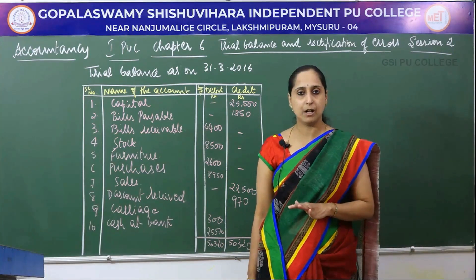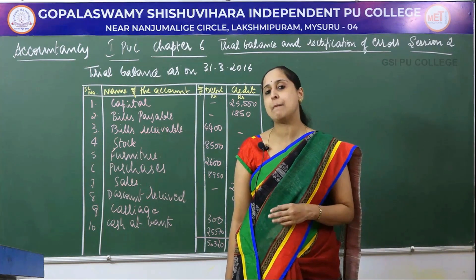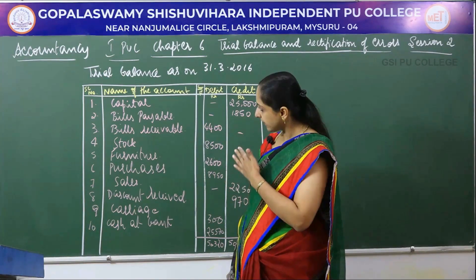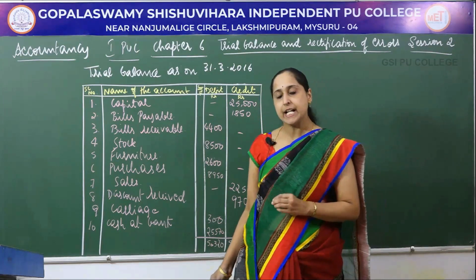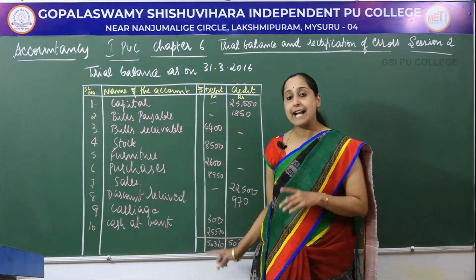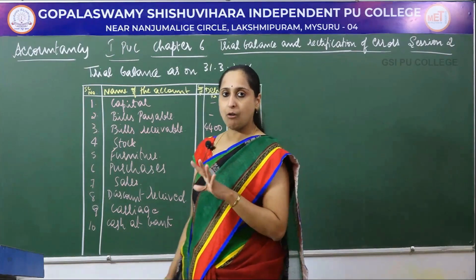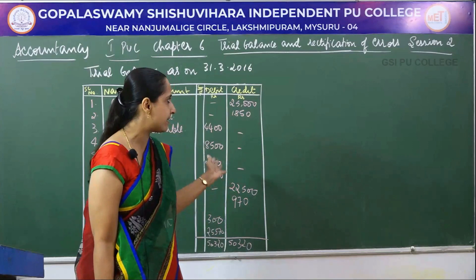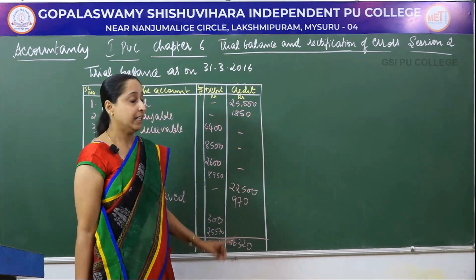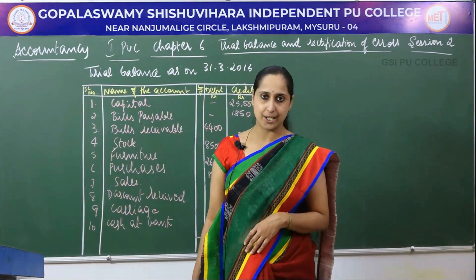This is a simple problem based on trial balance. In this session we did three problems based on trial balance. In the examination, a question based on trial balance is asked for six marks. While posting the name of the accounts into debit and credit, you have to remember the rule: record all assets and expenses in debit column, and all income and liability in credit column. If the total of debit and credit is equal, it means there are no errors. If the trial balance does not tally, it means there are some errors. I hope you have understood today's session. Thank you.